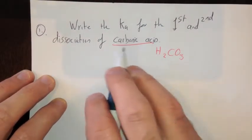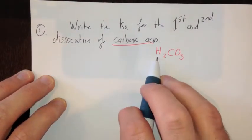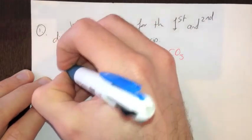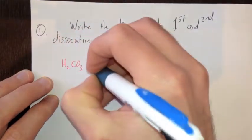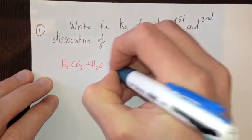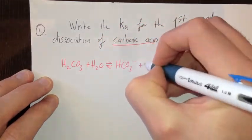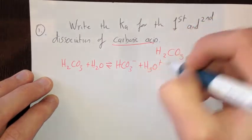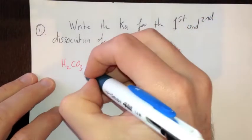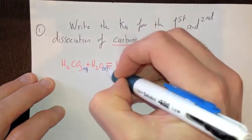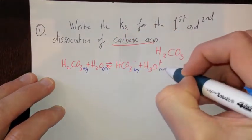Now obviously it's a diprotic acid, so you have the first and second dissociation. The first one: H2CO3 plus H2O is in equilibrium with HCO3- and H3O+. Obviously we should put in states as well. This is aqueous, this is liquid, this is aqueous and this is aqueous as well.